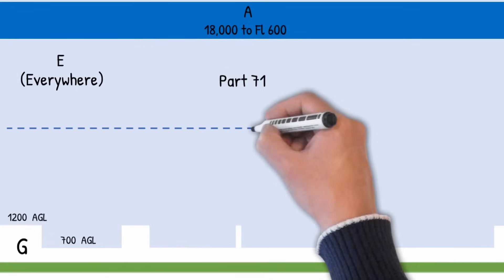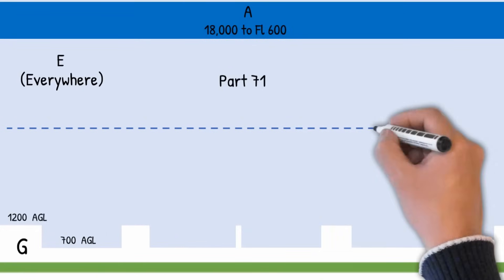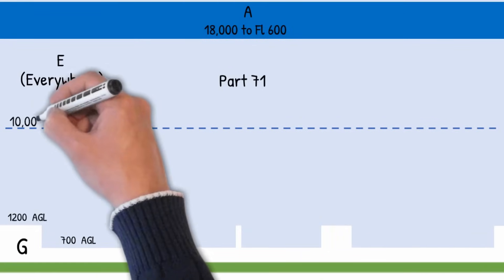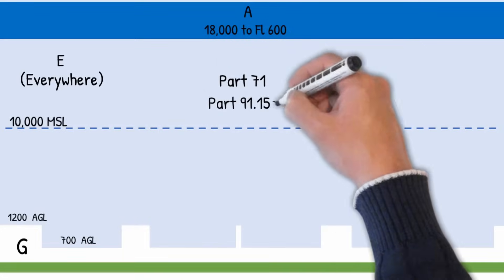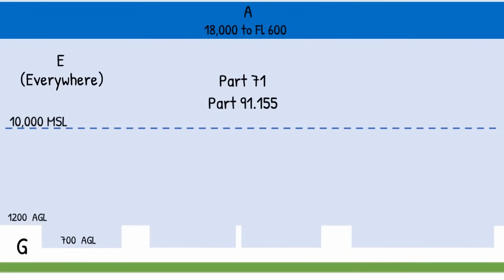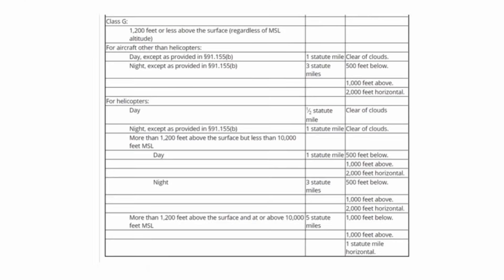One important thing to remember about Class E airspace is there's a delineation at 10,000 feet MSL, which changes visibility and cloud clearance requirements. All the cloud clearance and visibility requirements can be found on a chart in section 91.155. Here's an example of the chart. I just cut off the bottom half, which is where most of the confusion comes from when talking about airspace and cloud clearance requirements.